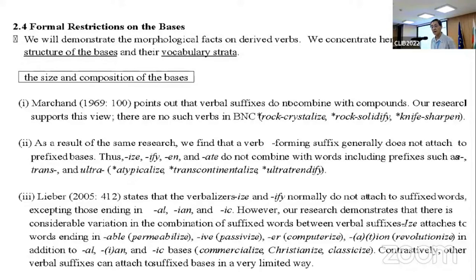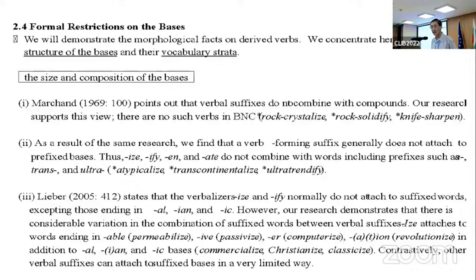2.4: Morphological properties. First, Marchand 1969 points out that verbal suffixes do not combine with compounds. Our research supports this view — there are no such verbs in BNC. For example, we can say rock crystal, but we cannot say rock-crystallize. Second, as a result of the same research, we find that the verb-forming suffix generally does not attach to prefixed bases. Thus, -ize, -ify, -en, and -ate do not combine with words including prefixes such as re-, trans-, and ultra-. So we can say atypical, but we cannot say atypicalize.